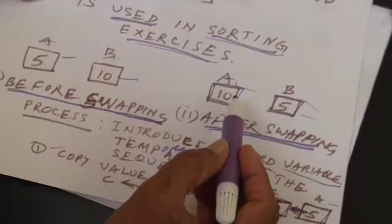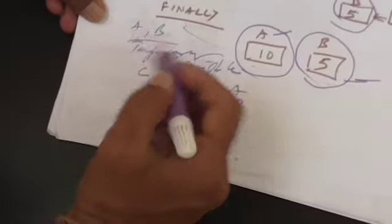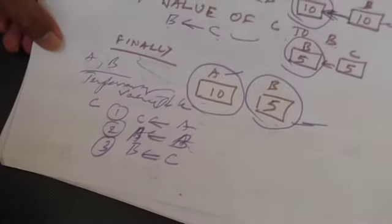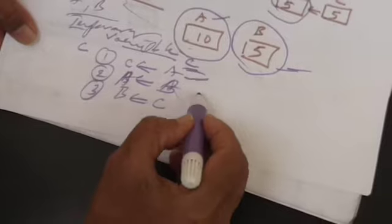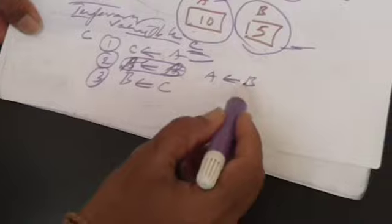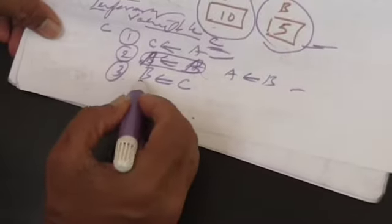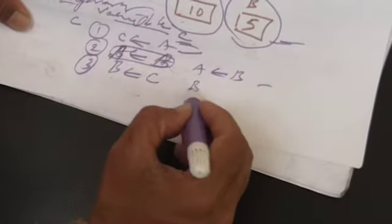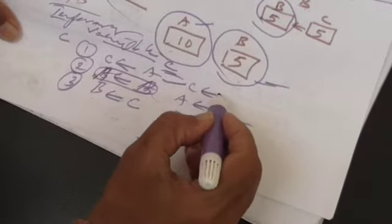This is what is expected out of our swapping exercise — finally A contains 10 and B contains 5. This is your final configuration. For whatever language you are going to use, whether it is C, C++, Java, C#, or any other language, when introducing the temporary variable C, the steps are: first, assign C the value of A; second, assign A the value of B; third, assign B the value of C. This is simply the method of swapping of two variables using a third variable.